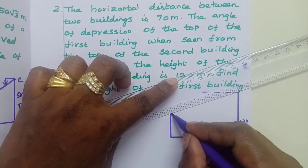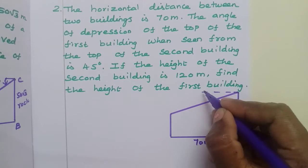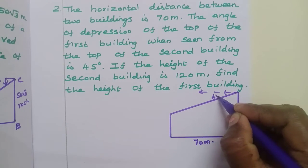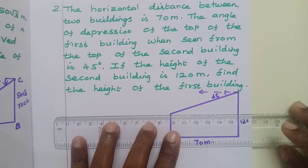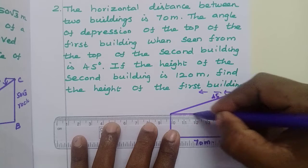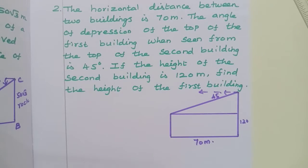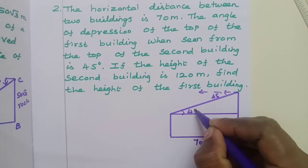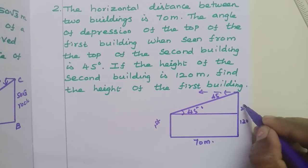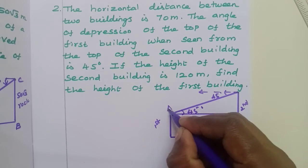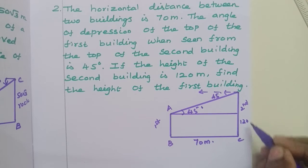This is the top of the second building. Now let's label the points: A, B, C, D.